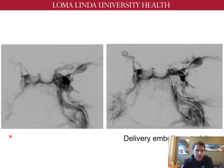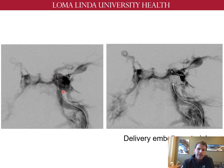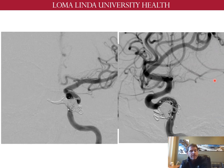We then inflate a balloon in the left ICA in order to prevent any embolic material getting into the carotid through the tear in the artery, and then start to deploy detachable coils using the microcatheter in the cavernous sinus, through the intercavernous sinus. After the fistula is blocked, there is restoration of normal contrast flow into the intracranial vessels.